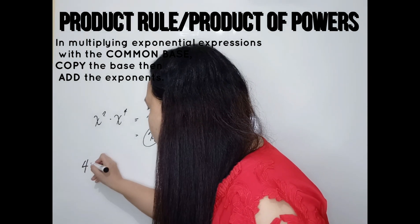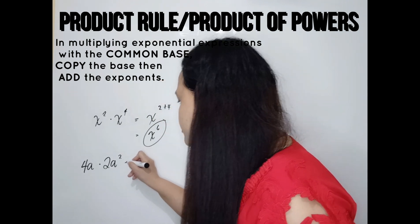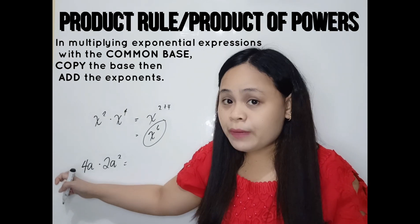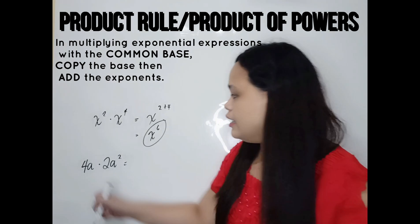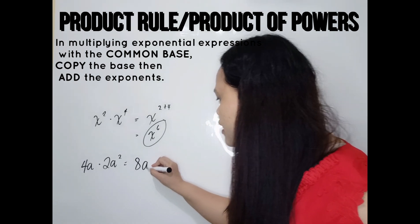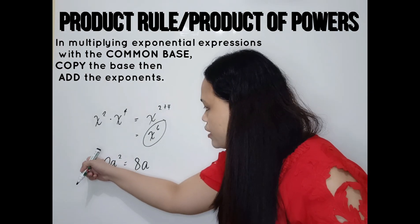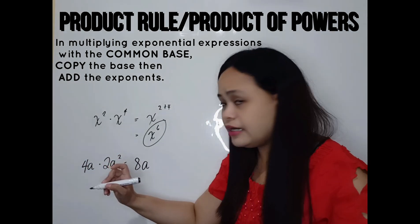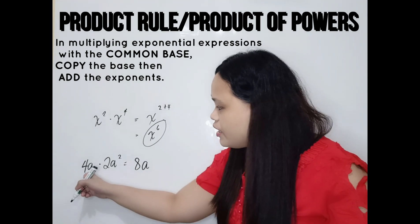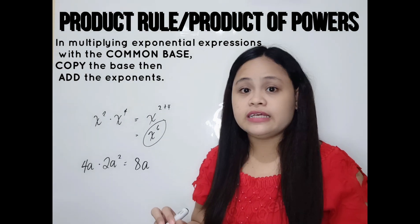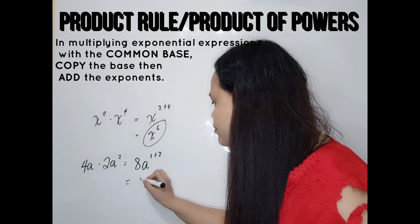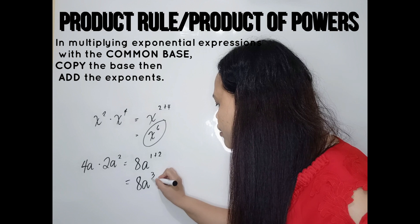What about 4a times 2a squared? Dito, merong numbers sa unahan — we call that the numerical coefficient. Kapag may numerical coefficient, uunahin mo siyang i-multiply. So 4 times 2 is 8. At parehas naman yung base natin na a — you will just copy a — and don't forget to add the exponents. Remember that any variable has an implied exponent of 1. So 1 plus 2 is 3, and our final answer is 8a to the power of 3.